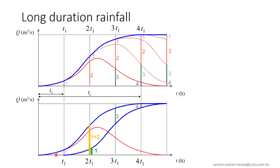So, if we observe such an S-shaped hydrograph, we know that it is the result of a long-duration rainfall that can be separated into several rains of short duration t1. We can just shift the S-curve by t1 to obtain a second blue curve. The difference between the two curves is then the hydrograph resulting from a short rainfall of duration t1. For example, at time 2t1, the upper curve ordinate is 1 plus 2, while the shifted curve ordinate is 1. The difference between the two curves is 3, and so on. To obtain the unit hydrograph, it only remains to scale this difference hydrograph so that it corresponds to a unit rainfall of 10 mm.